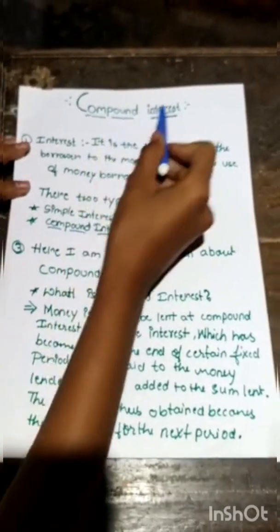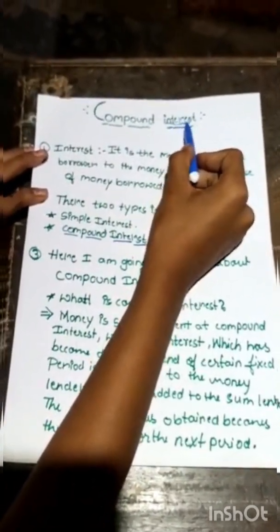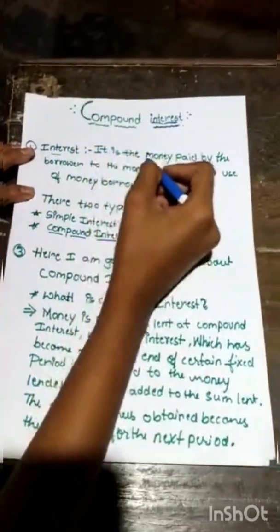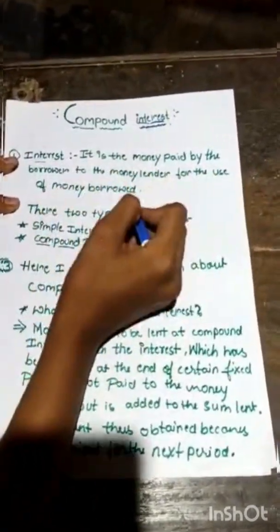Compound interest. First, we will understand about interest. First one is interest. What is interest? It is the money paid by the borrower to the money lender for the use of money borrowed.